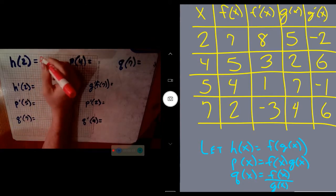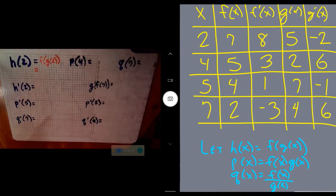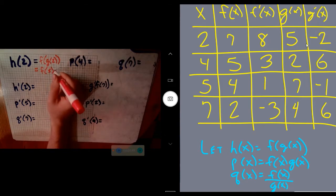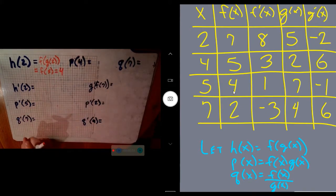So h(2) means f(g(2)). We work from the inside out. g(2), when you look at this chart, is going to be right here. g(2) is 5. So that means I want to do f(5), and f(5) gives me a value of 4. That's how you can use your table to find various values.